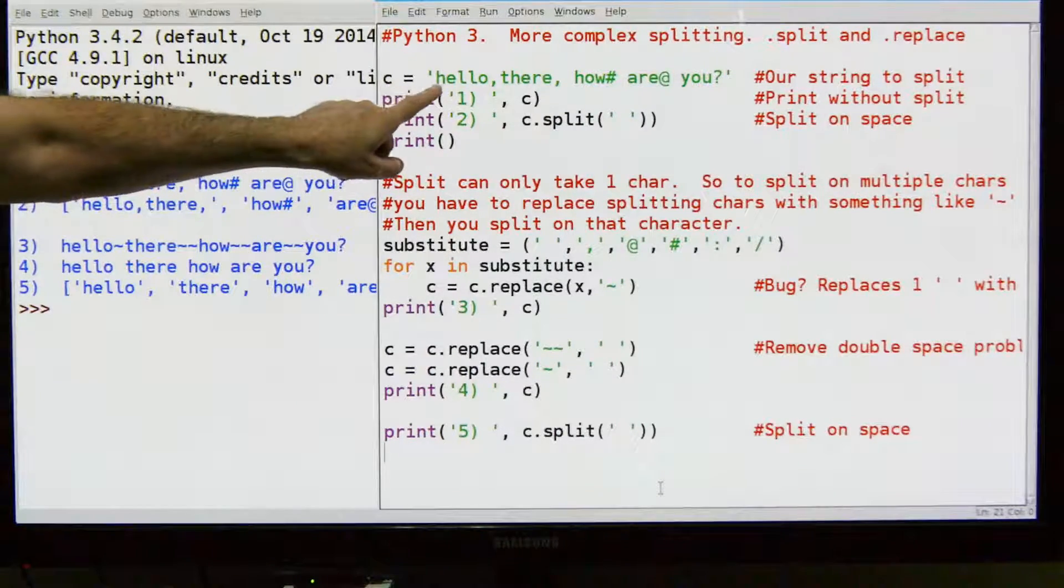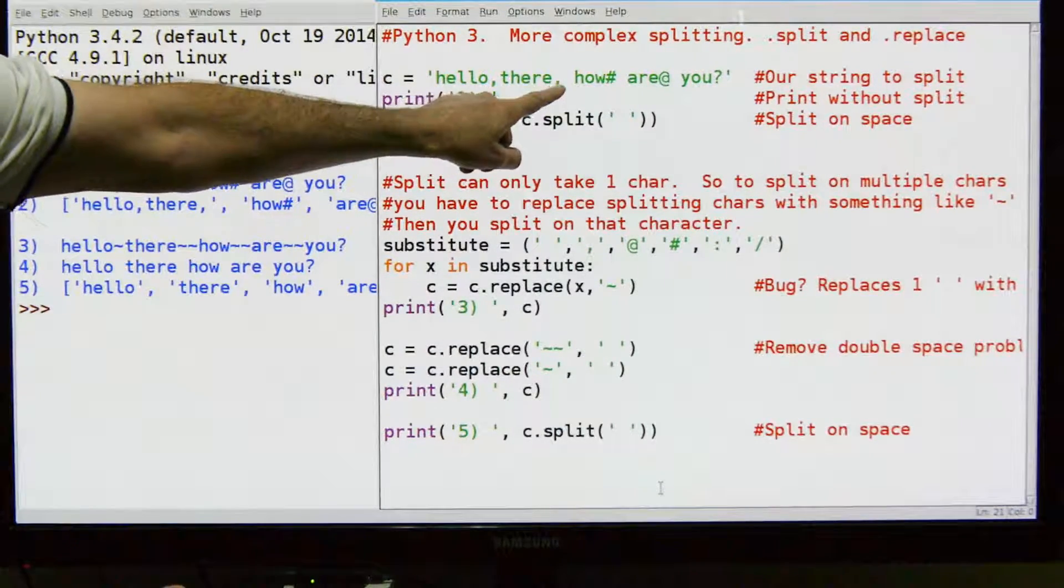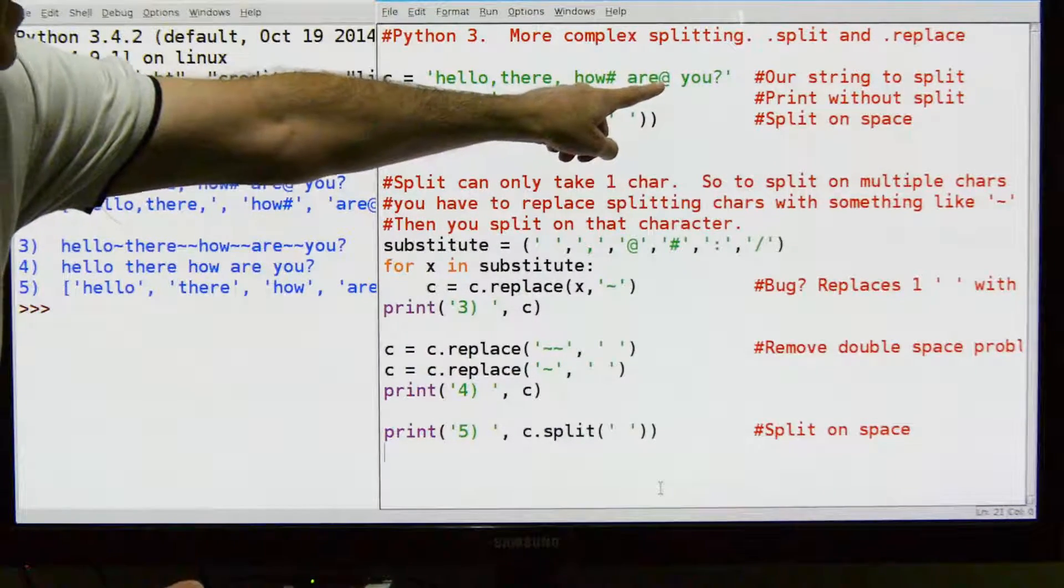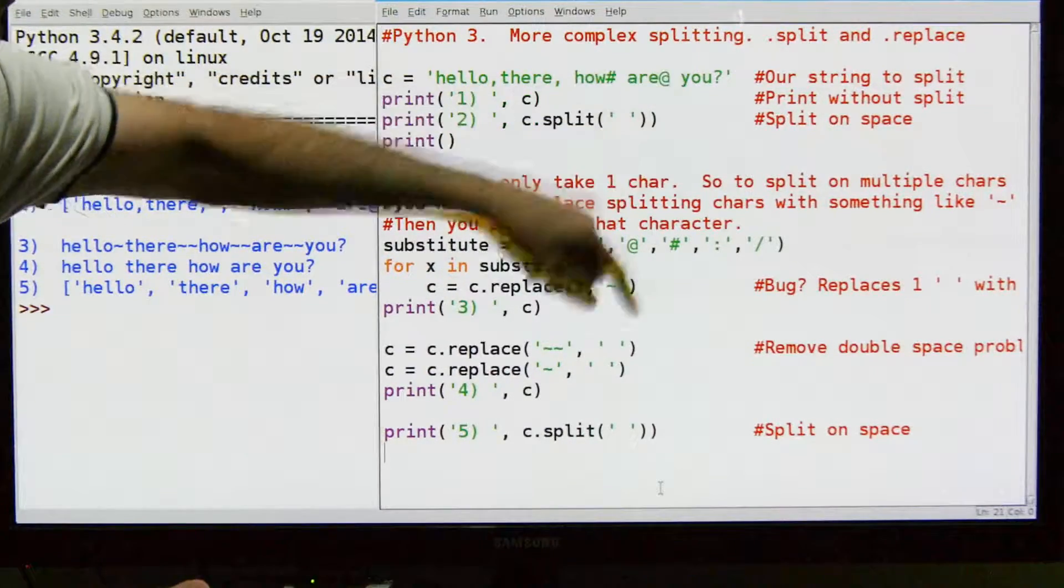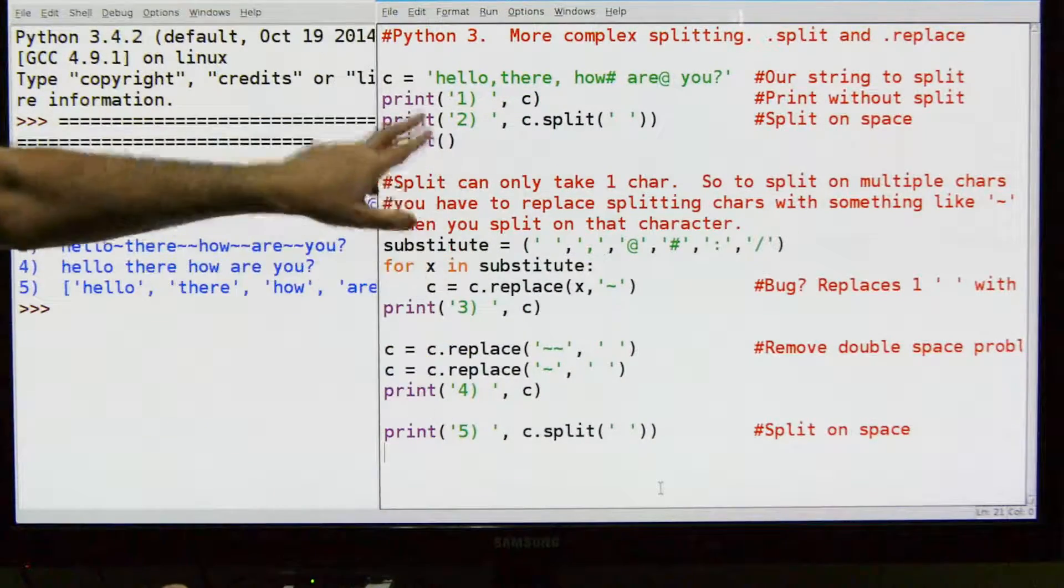Here's my sample. I'm going to say hello comma there comma space how pound space r at sign space you question mark. And we're going to store it in C here.